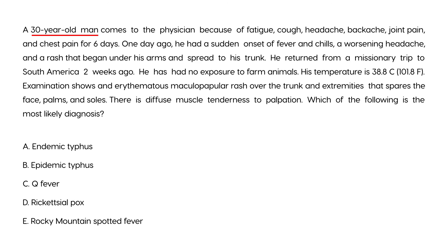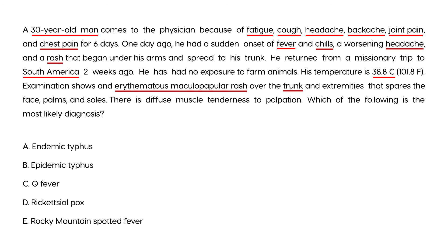Clinical vignette 2: A 30-year-old man presents with fatigue, cough, headache, backache, joint pain, chest pain for six days, then sudden fever, chills, and a rash beginning under his arms spreading to his trunk. He returned from a missionary trip to South America two weeks ago. Exam shows an erythematous maculopapular rash over the trunk and extremities sparing the face, palms, and soles, plus diffuse muscle tenderness. The rash and recent trip to South America point to epidemic typhus — choice B.